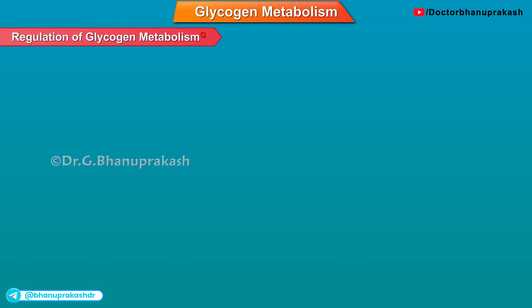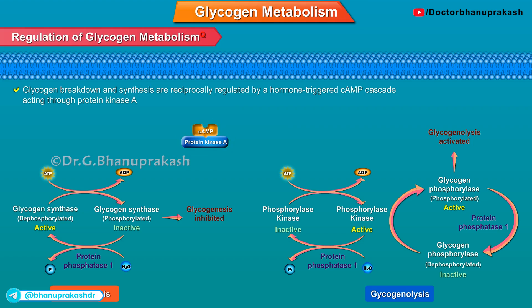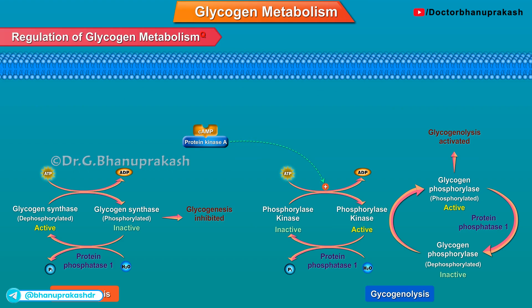Regulation of glycogen metabolism: Glycogen breakdown and synthesis are reciprocally regulated by a hormone-triggered cyclic AMP cascade acting through protein kinase A. In addition to phosphorylating and activating phosphorylase kinase, protein kinase A adds a phosphoryl group to glycogen synthase, which leads to a decrease in enzymatic activity. This important control mechanism prevents glycogen from being synthesized at the same time that it is being broken down.